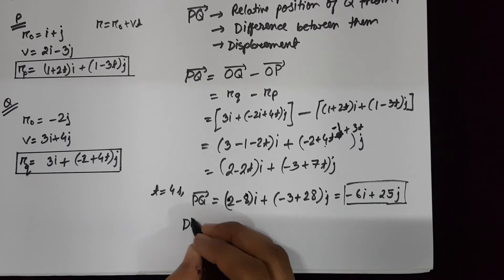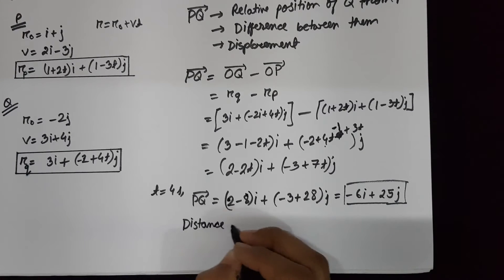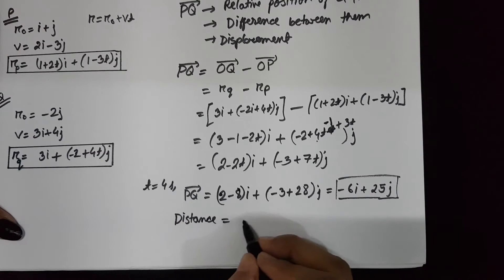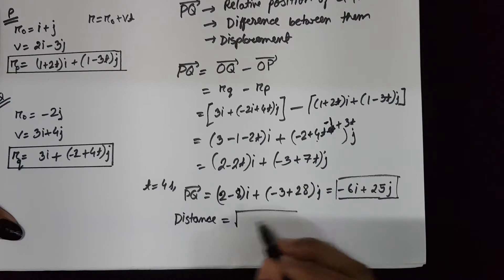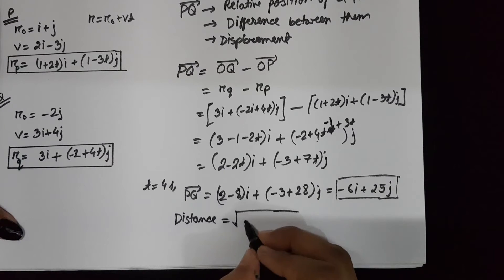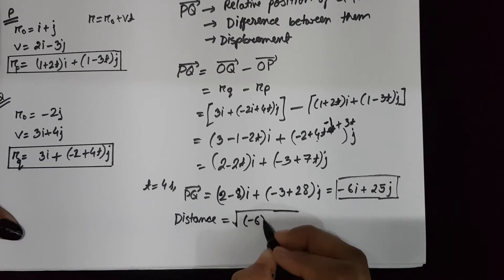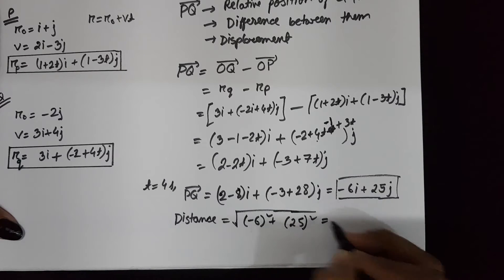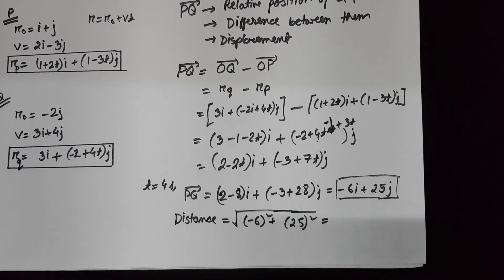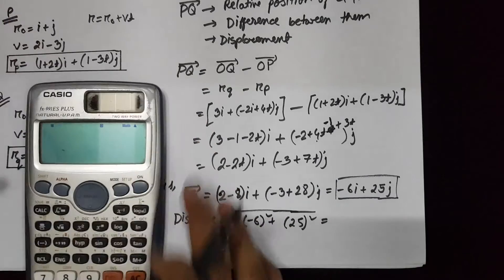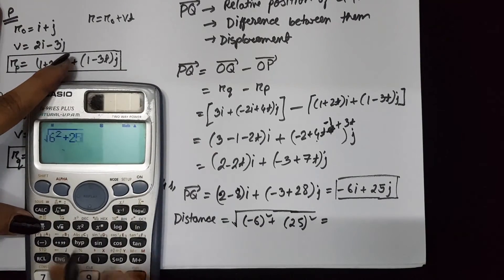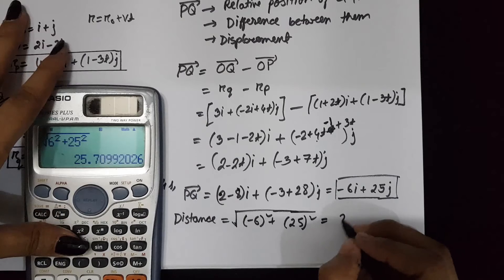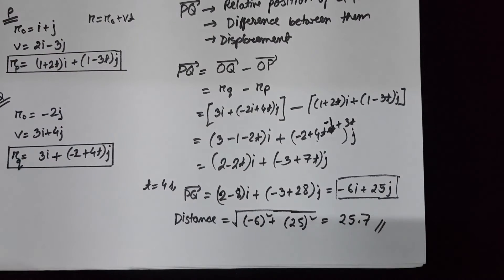If we need distance — which is a scalar quantity — then we need to find the modulus of the displacement. That is √((-6)² + 25²), which comes out to approximately 25.7.